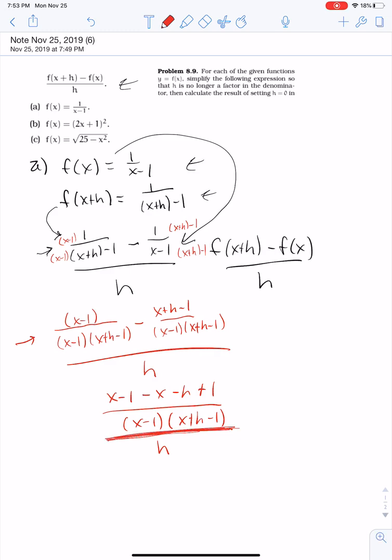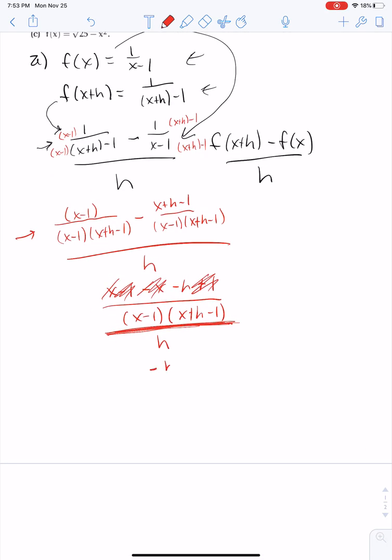And so I can do some more simplification. I have x minus x, that's going to go away. I have negative 1 plus 1. And so ultimately I have negative h over x minus 1 times x plus h minus 1, all divided by h.